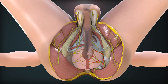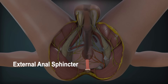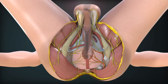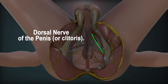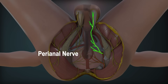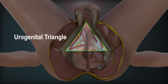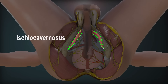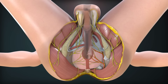In the posterior part of the canal, it gives off the inferior rectal nerve, which crosses the fossa to innervate the external anal sphincter and perianal skin. It then divides into terminal branches: a large perineal nerve and a small dorsal nerve of the penis or clitoris. The perineal nerve bifurcates almost at once; its deeper branch supplies the sphincter urethrae and other muscles of the urogenital triangle.